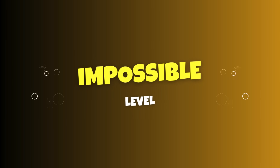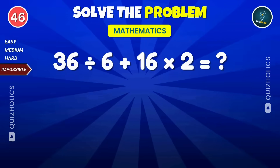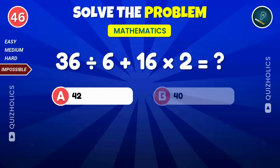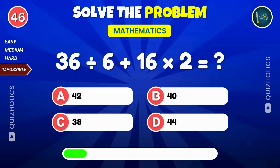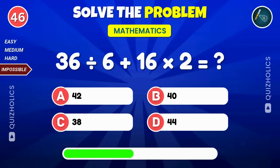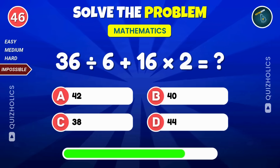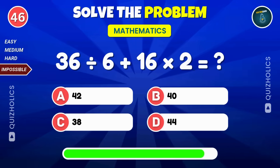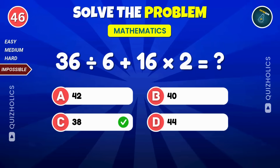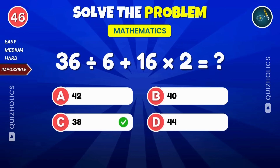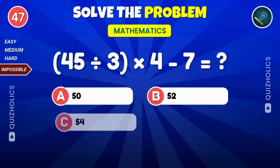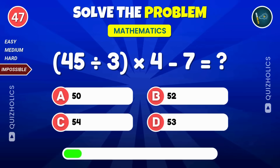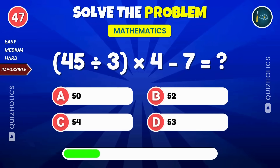This is the impossible level. Are you ready to push your limits? Solve this impossible one: 36 divided by 6, then add 16 times 2. Can you crack this? 45 divided by 3, multiply by 4, then subtract 7.